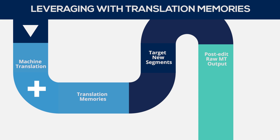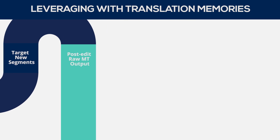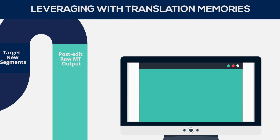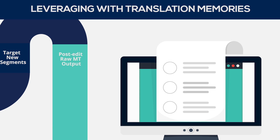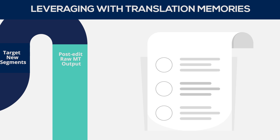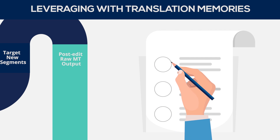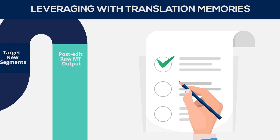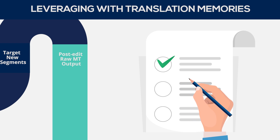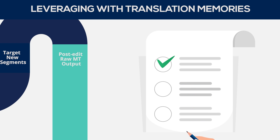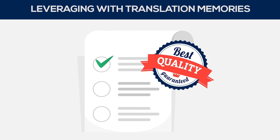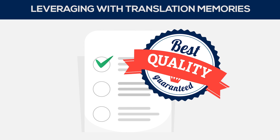These segments include new or heavily modified content. The raw machine translation output generated is then post-edited by experienced linguists and is either accepted or modified before being inserted back into the translated document. This combined method produces the best results in terms of quality and time efficiency.